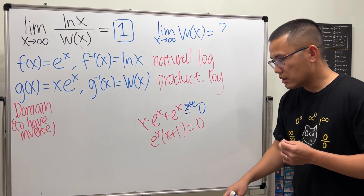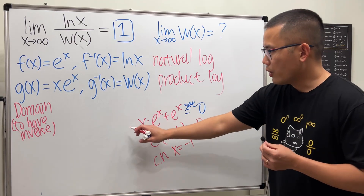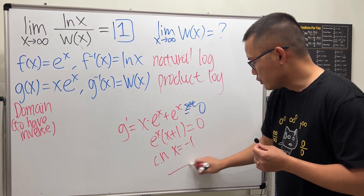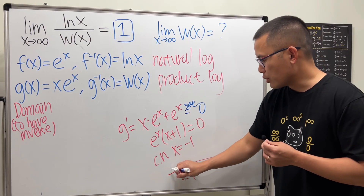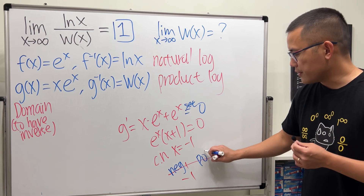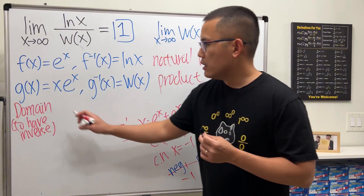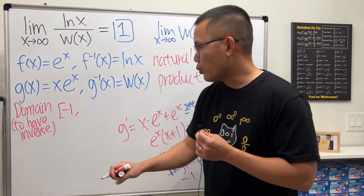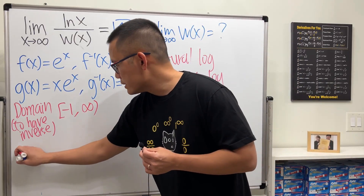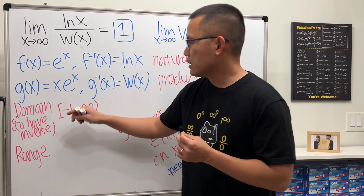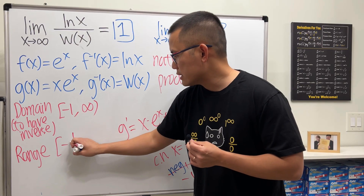Setting eˣ·(x + 1) = 0 gives x = -1 as the critical number. Using a number line, we see a negative derivative before x = -1 and a positive derivative after, confirming the absolute minimum is at x = -1. So the domain for the inverse is x ≥ -1, starting at -1 and going to infinity.